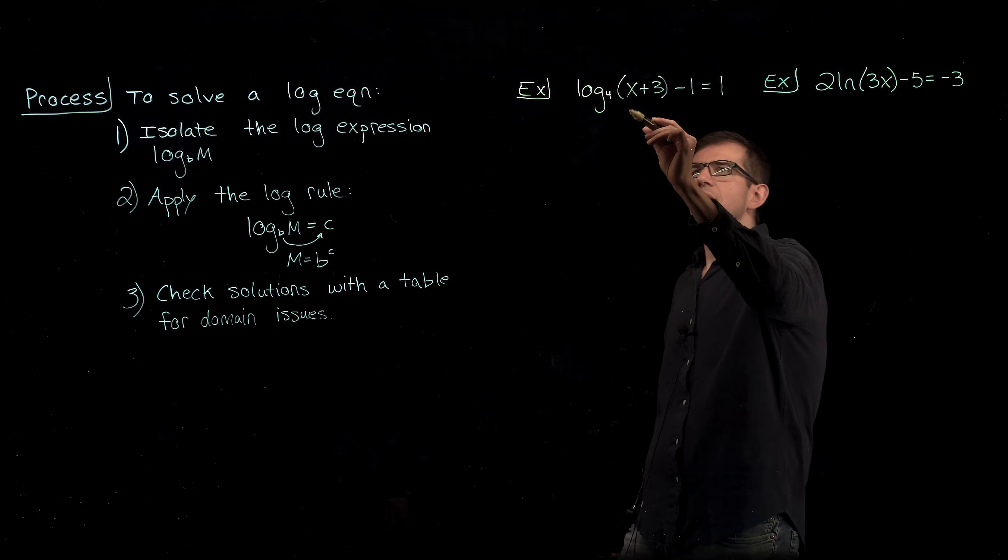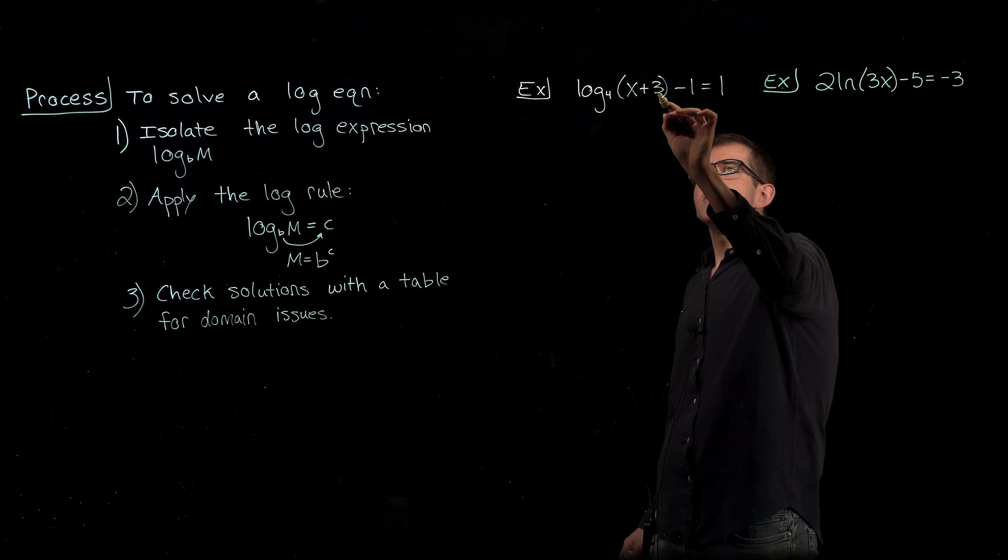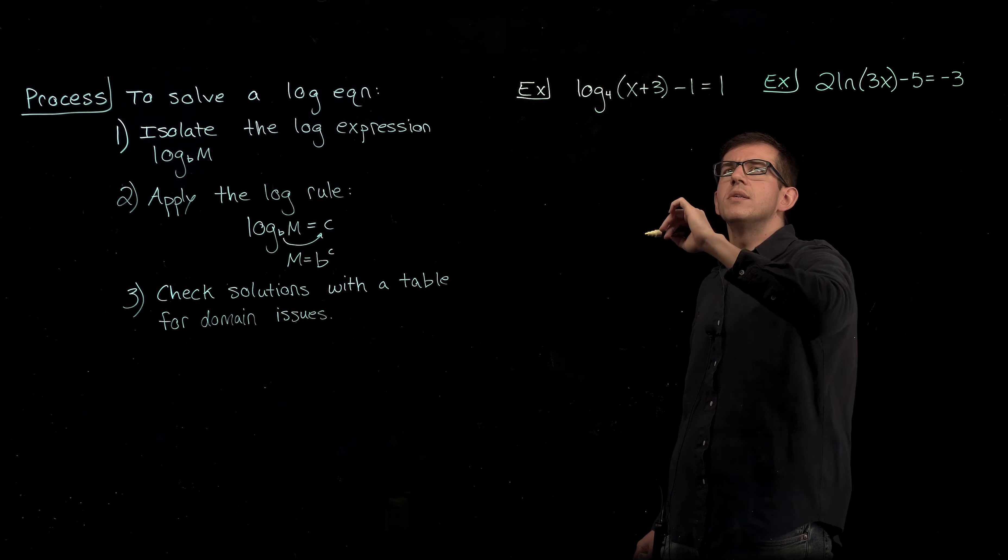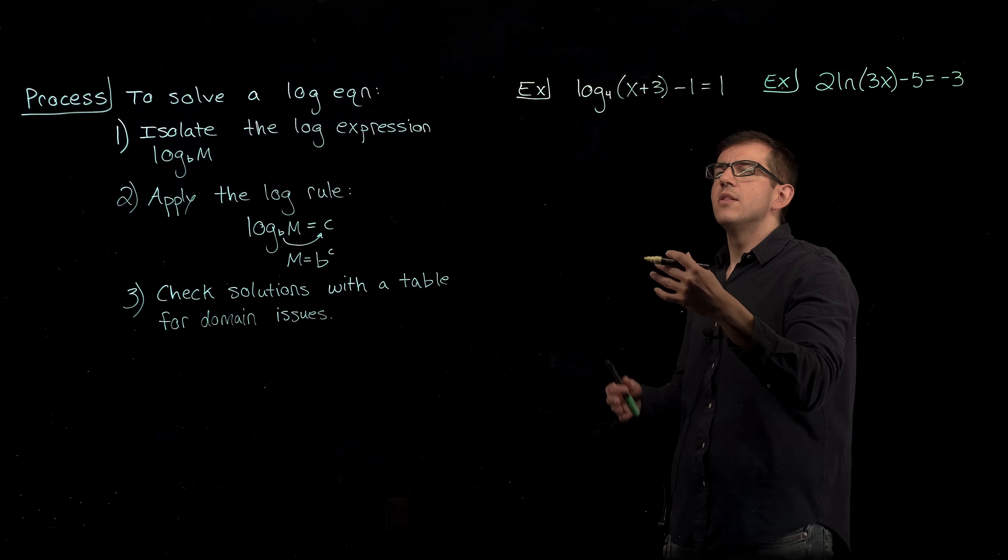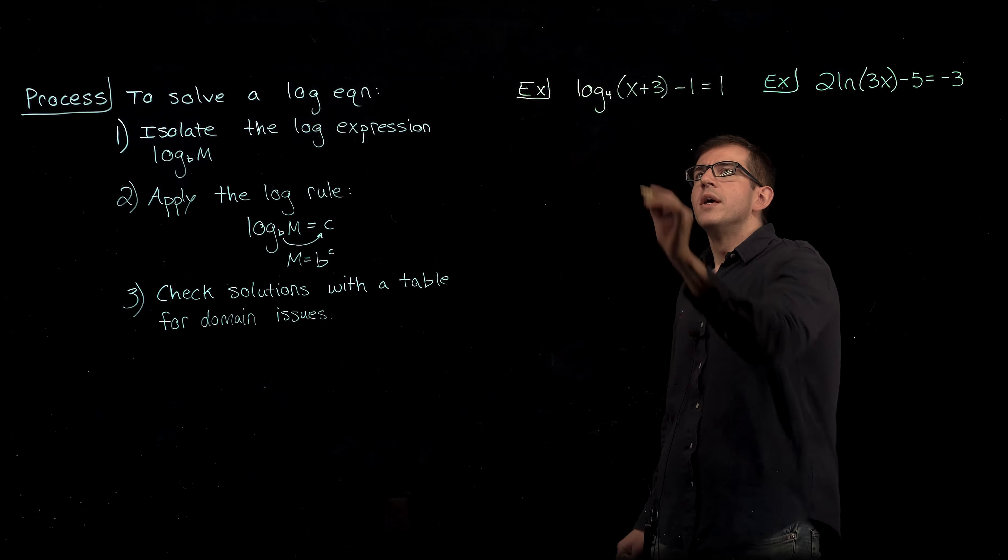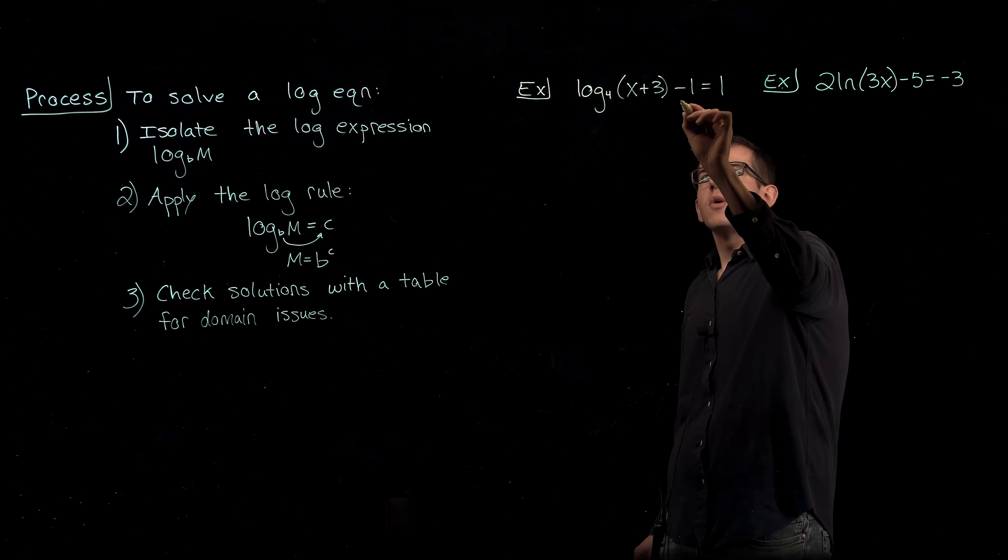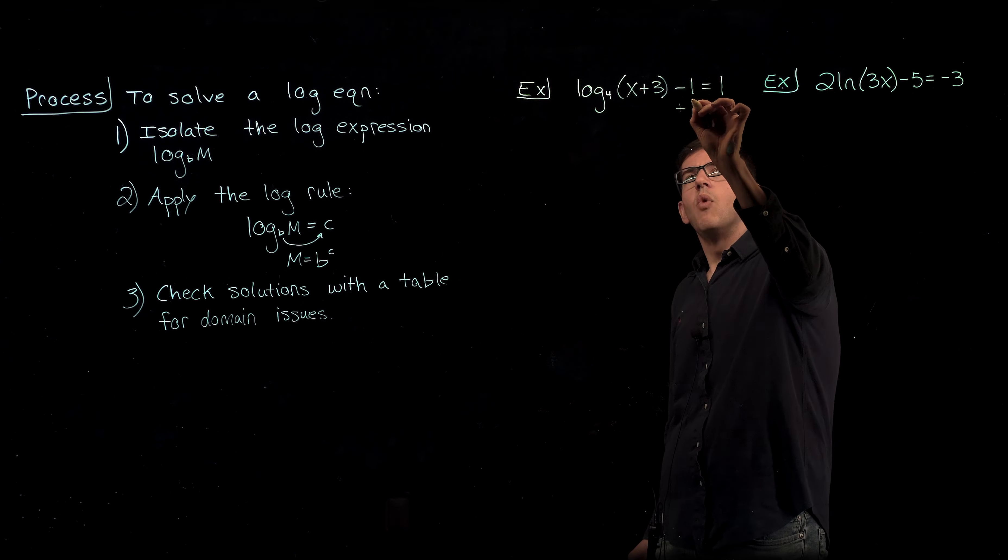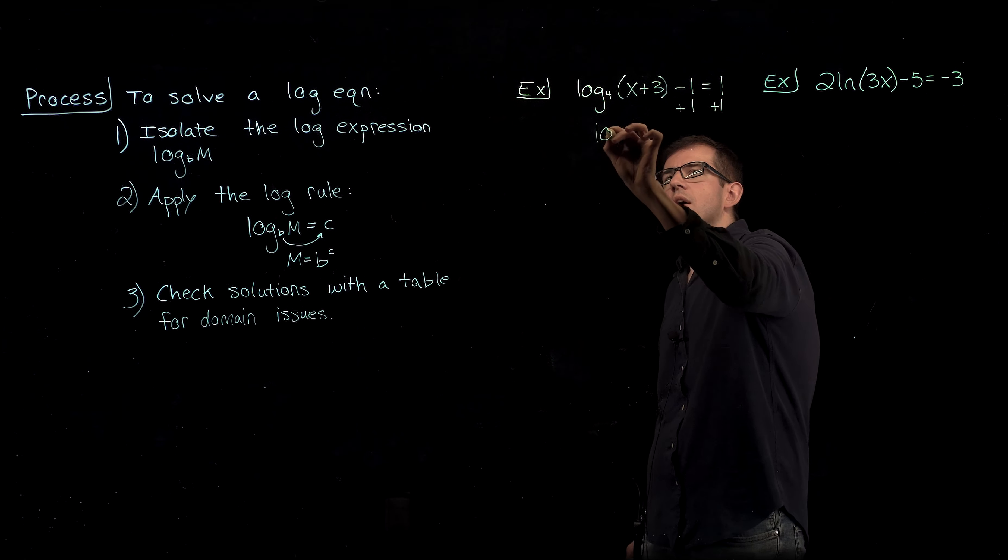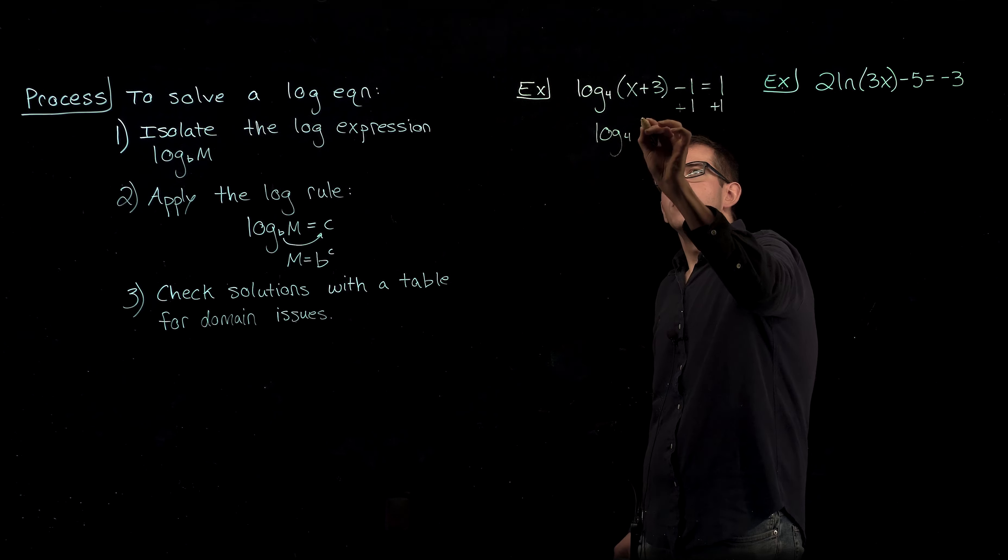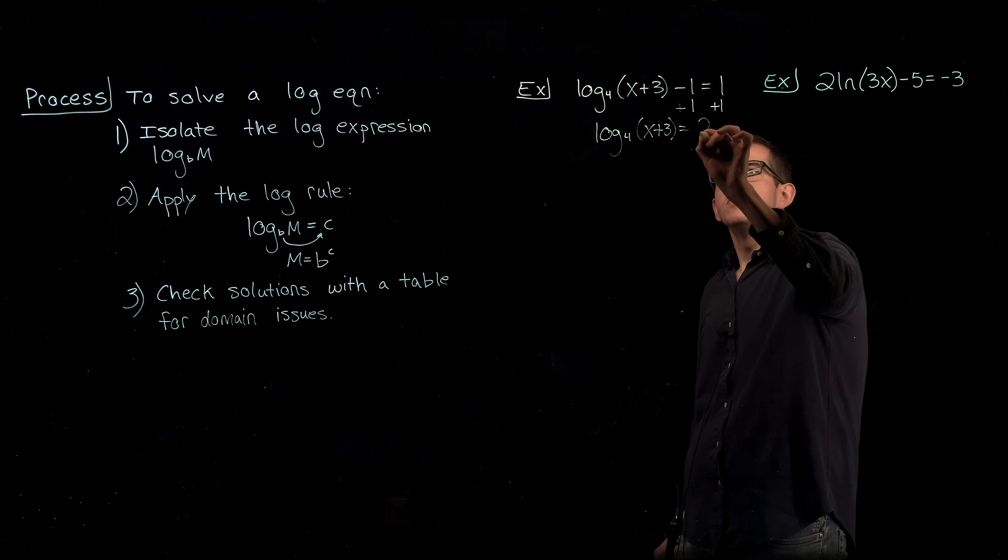So with that, let's go ahead and try the example log base 4 of x plus 3 minus 1 equals 1. The first thing that we have to do is isolate the logarithmic expression. That's log base 4 of x plus 3 in this case. So we're going to add 1 to each side of the equation to get this alone, giving us log base 4 of x plus 3 is equal to 2.